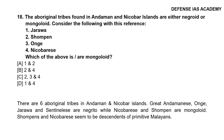Question 18: The aboriginal tribes found in Andaman and Nicobar Islands are either negroid or mongoloid. Consider: 1. Jarawa, 2. Shompan, 3. Onge, 4. Nicobarese. Which of these are mongoloid? The correct answer is option B, 2 and 4 — Shompan and Nicobarese are mongoloid. There are six aboriginal tribes in Andaman and Nicobar Islands. Great Andamanese, Onge, Jarawa and Sentinelese are negrito, while Nicobarese and Shompan are mongoloid, and appear to be descendants of primitive Malayans.